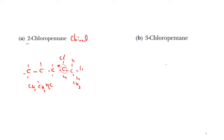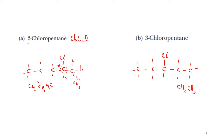Now, 3-chloropentane. In that case, I will have the chlorine atom attached in the middle with hydrogens. You could see that this carbon is attached to CH2CH3 on one side and also to CH2CH3 on the other side. Because they are similar groups on both sides of my carbon, this compound is not chiral.